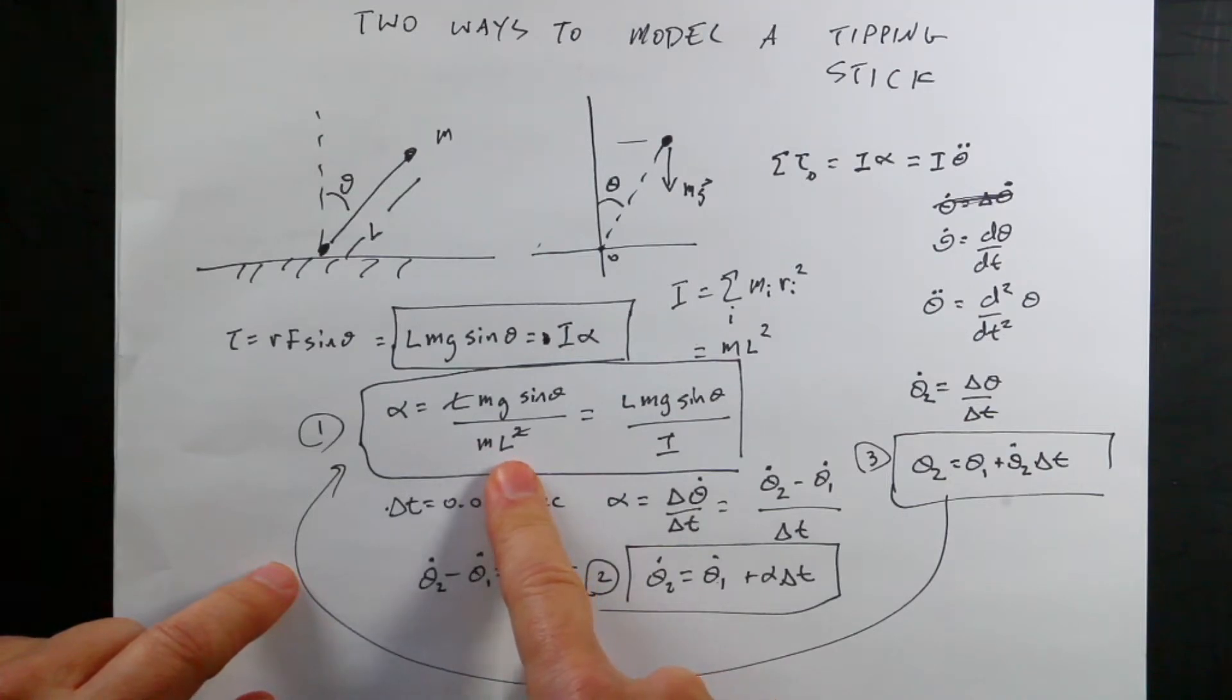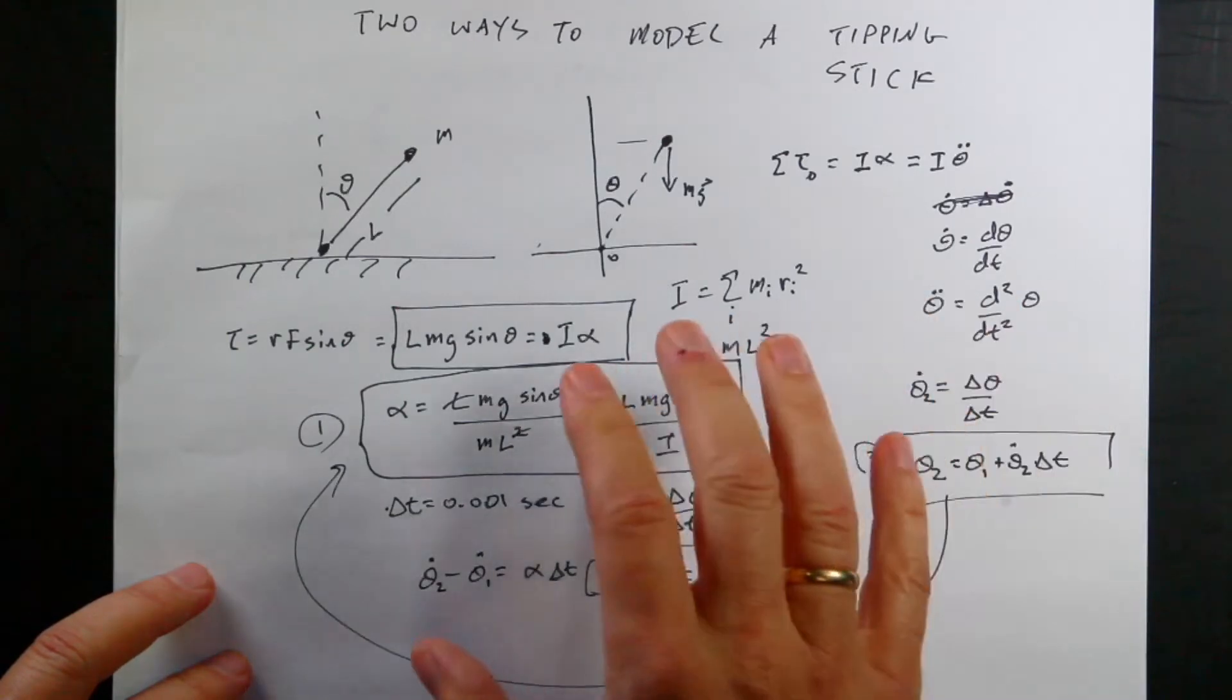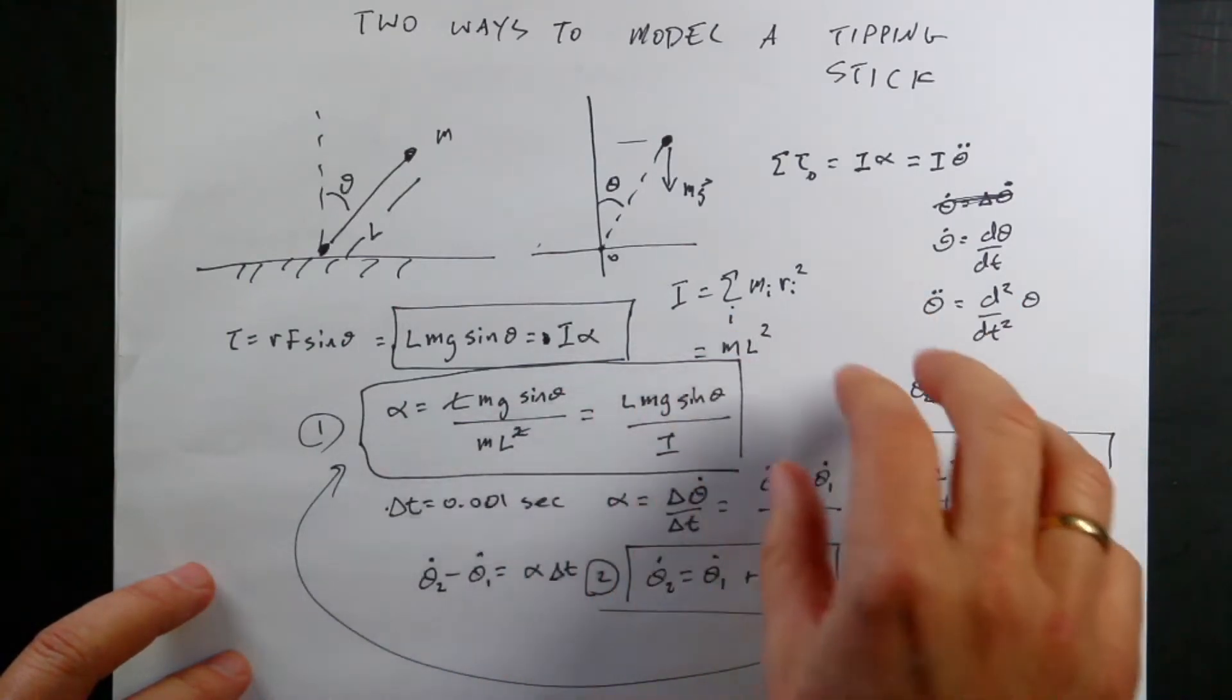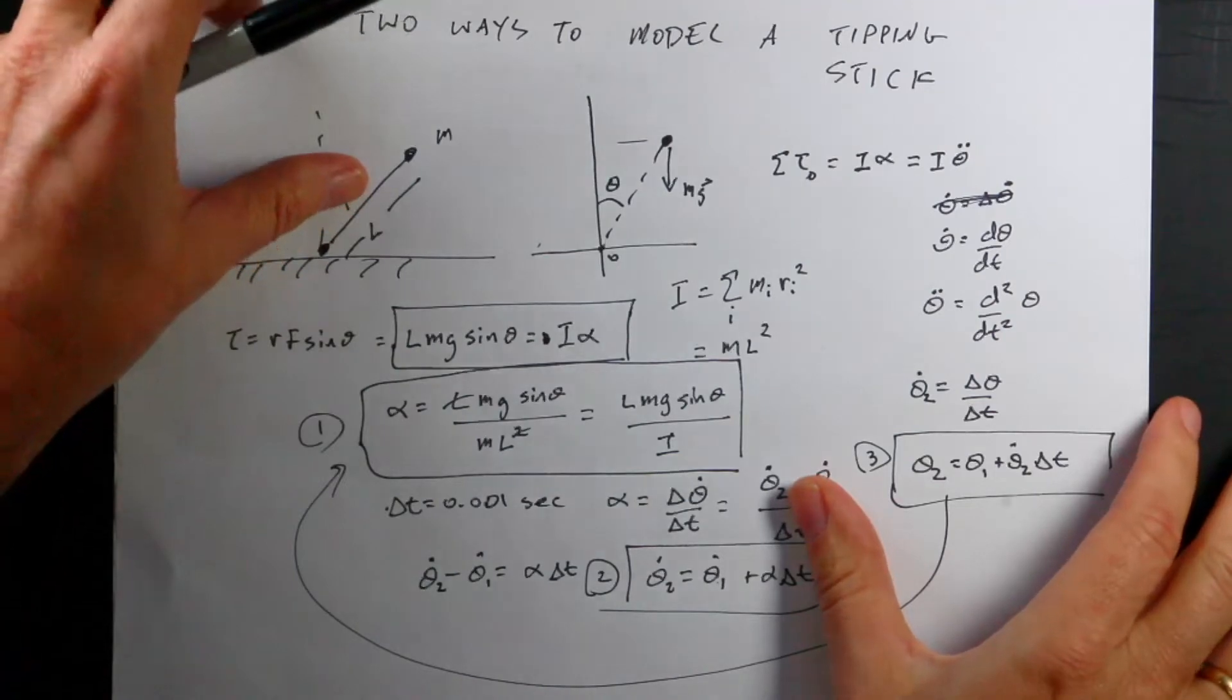Solve for the angular acceleration. Use that in the Euler method to update the angular velocity doing a numerical calculation, and then update the angular position using that same time frame, a short time step. Then once I calculate theta and I redo it every time, I can use theta to find the new position of my ball and model it in Python. I'm going to show you that code in just a second. But let's talk about the other way to model this.